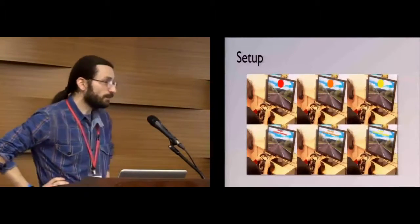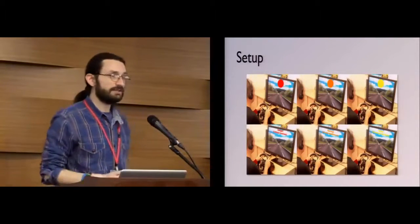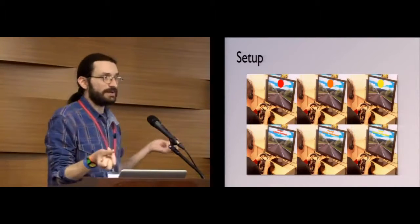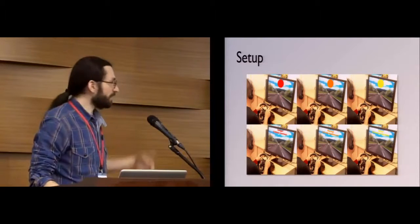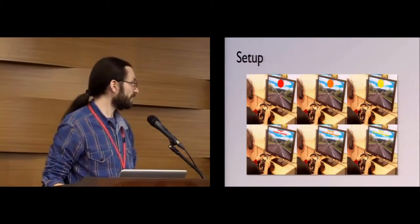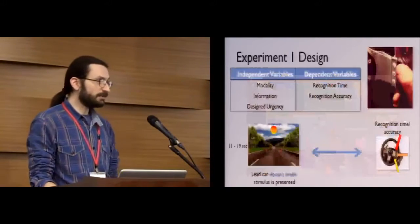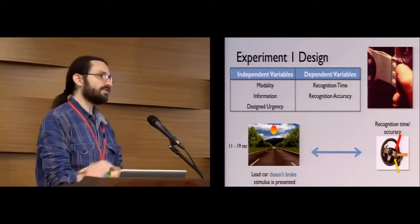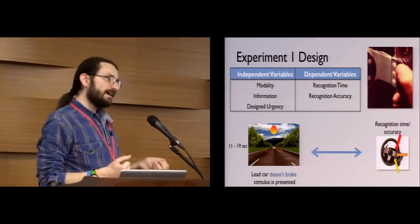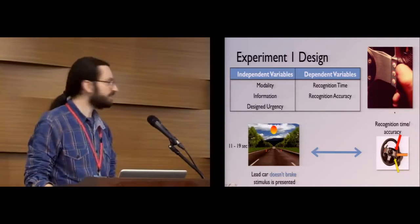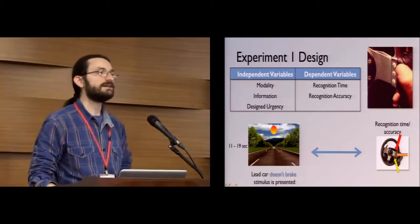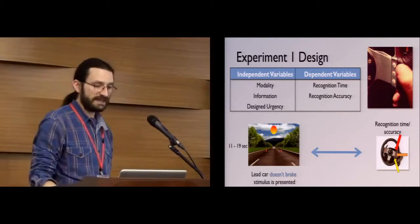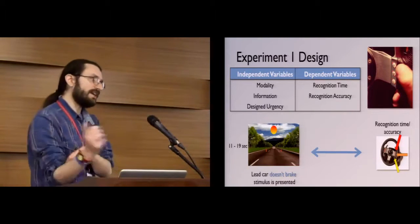The setup was a simple desktop driving simulator where participants drove a car and used a steering wheel and brake pedal. In the first experiment, we used a non-critical button response task. Participants had to recognize how urgent the message was and press a corresponding button on the steering wheel — H, M, or L for high, medium, or low urgency — as quickly as possible. We measured recognition time and accuracy. Factors were modality, information type (language-based or abstract), and designed urgency level.